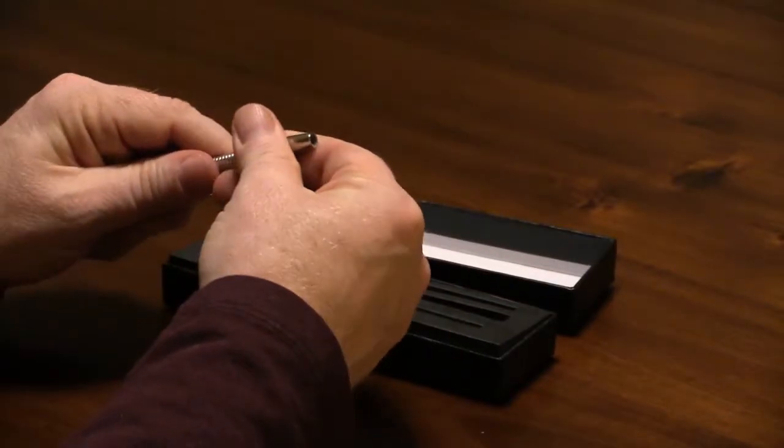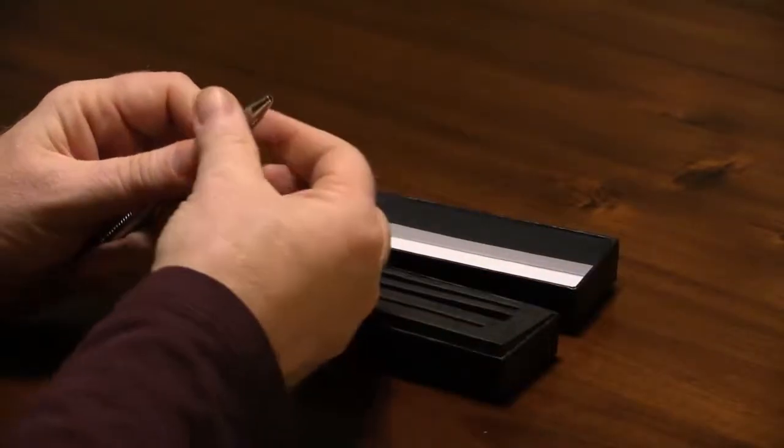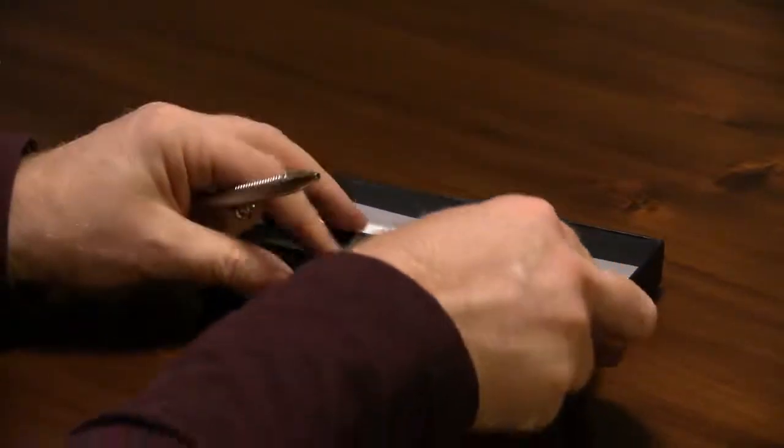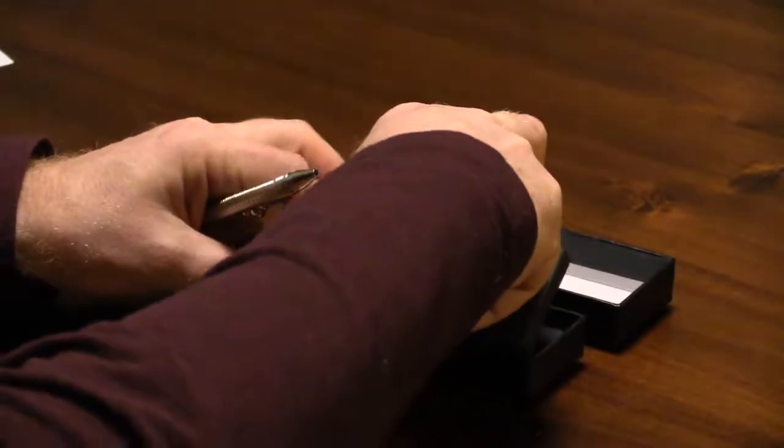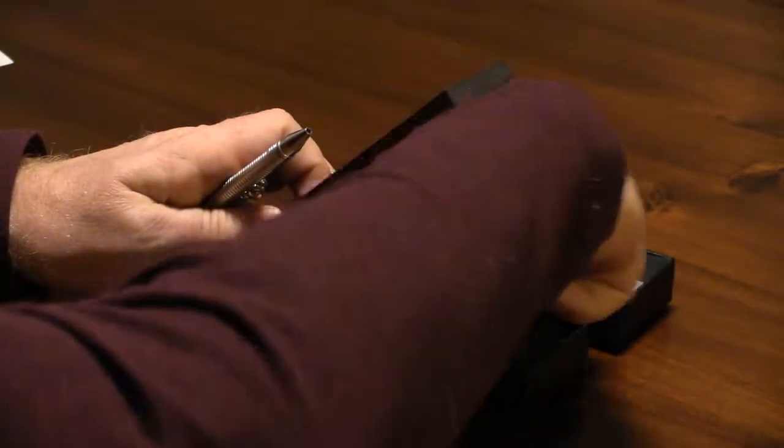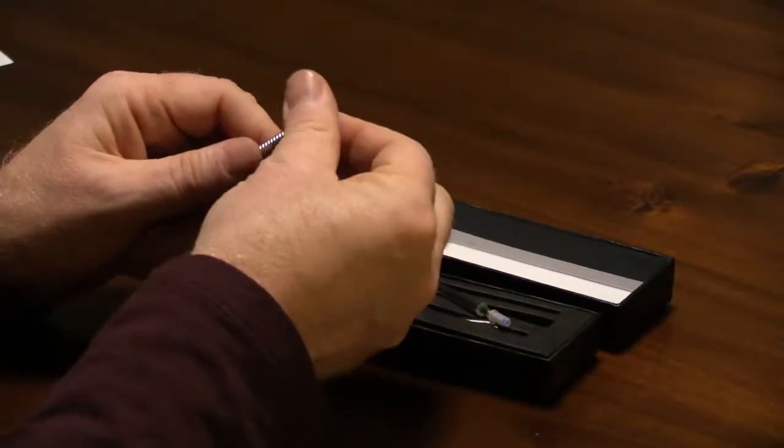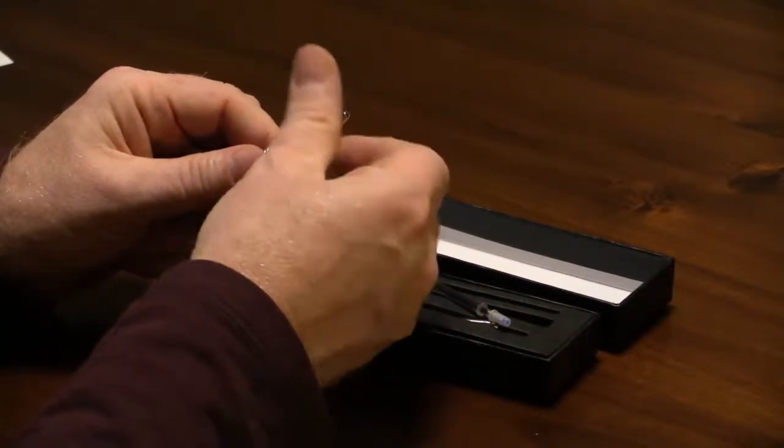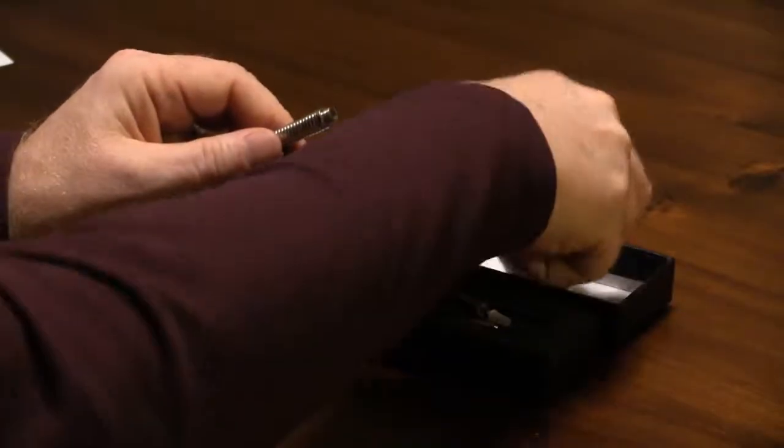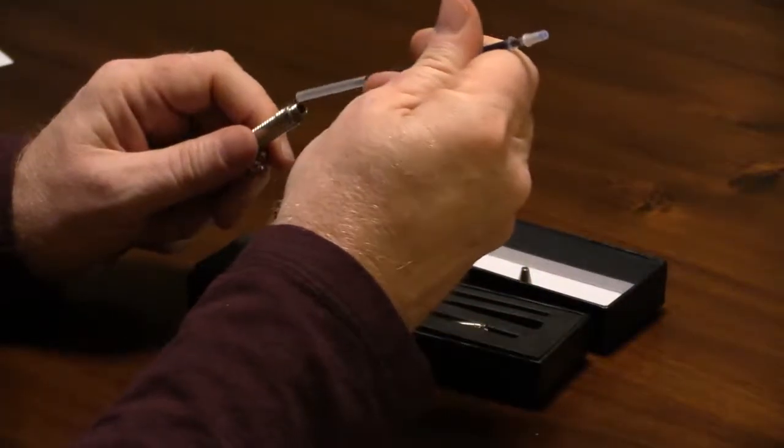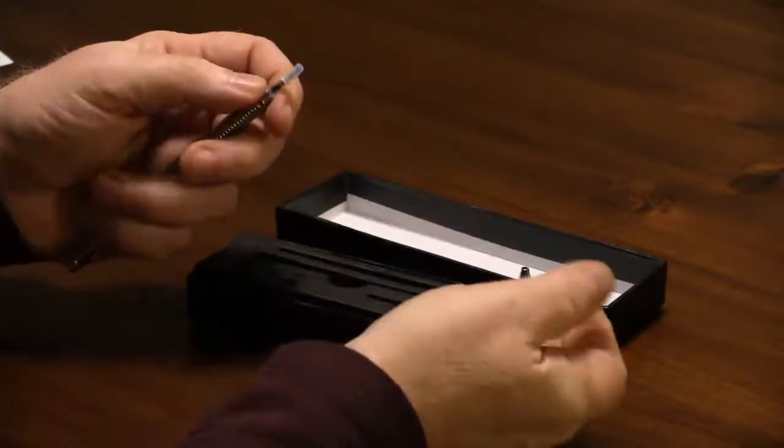This thing on the front is just a cover and you pull that off and then this unscrews and there is an ink cartridge. Here it is. There is an ink cartridge here that goes in. So I'll put the ink in just so you can see that it works.